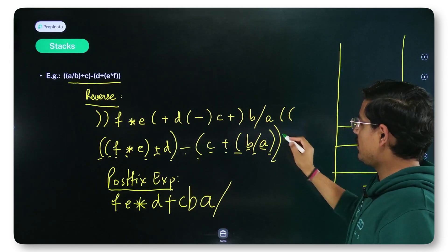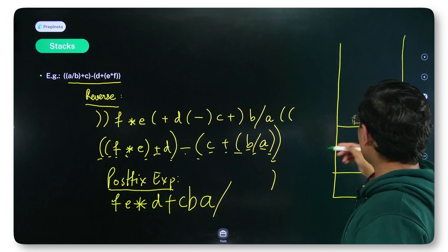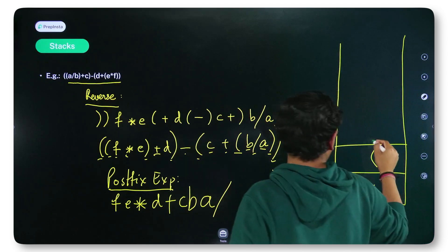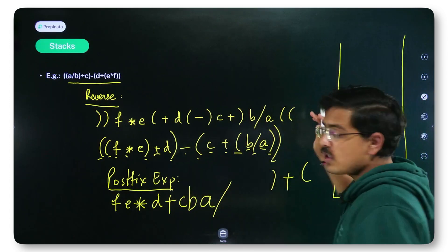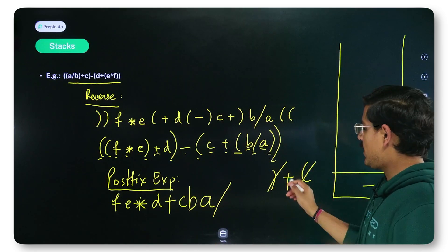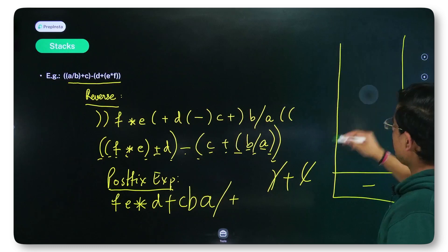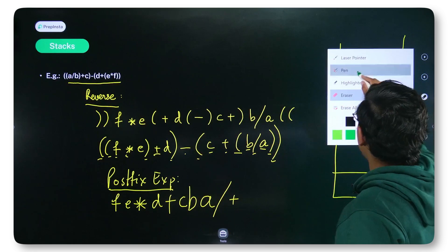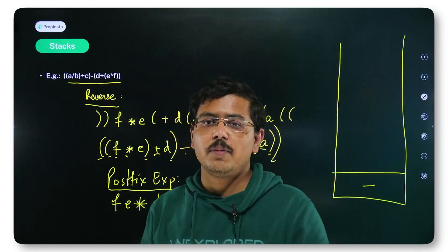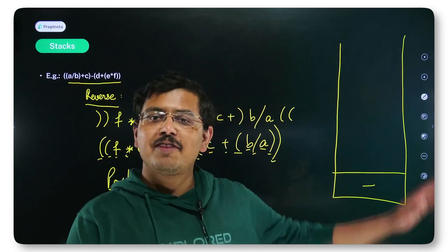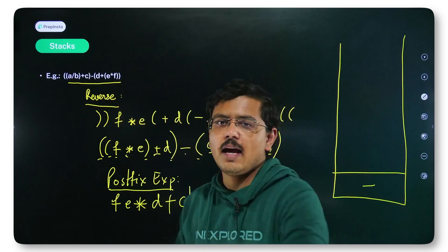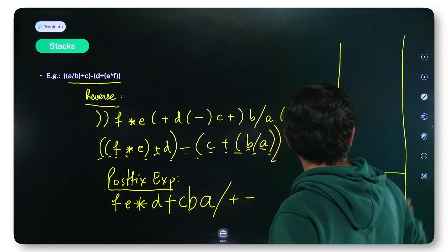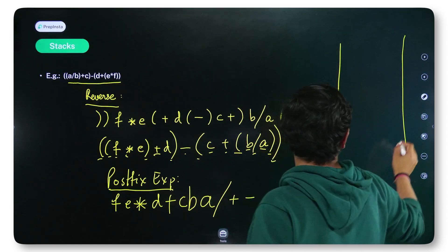After this, I find another closing parenthesis, so I pop again. The plus operator comes out, then the opening parenthesis comes out. As soon as the opening parenthesis comes out, I stop. I discard both of them and print plus.